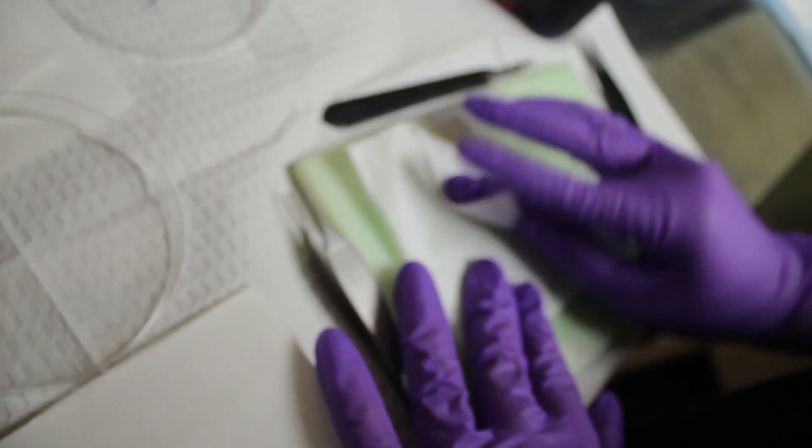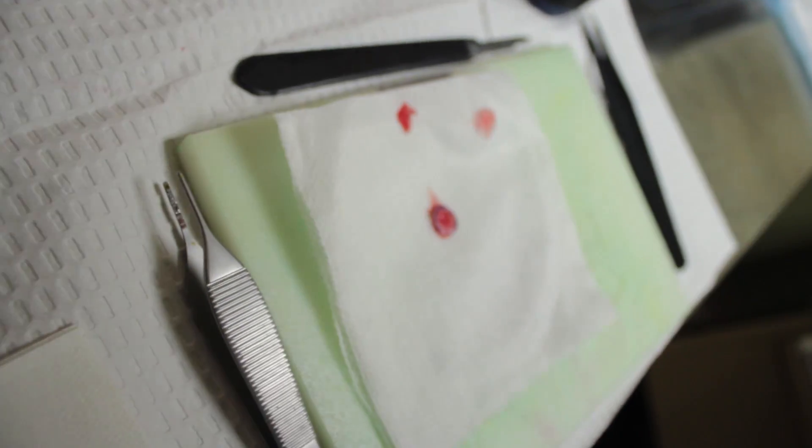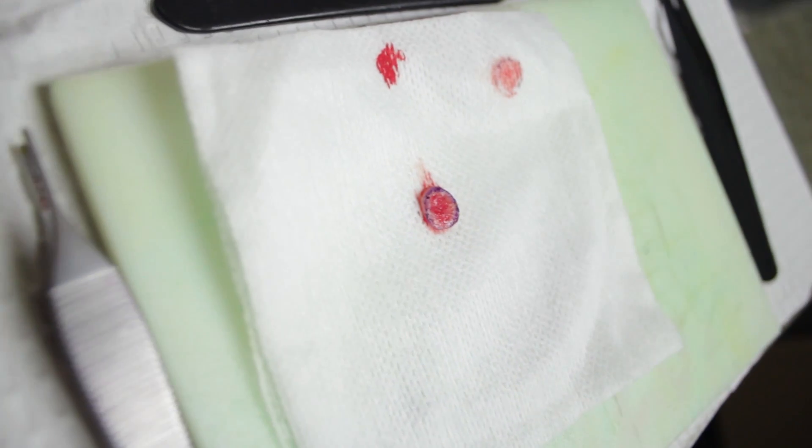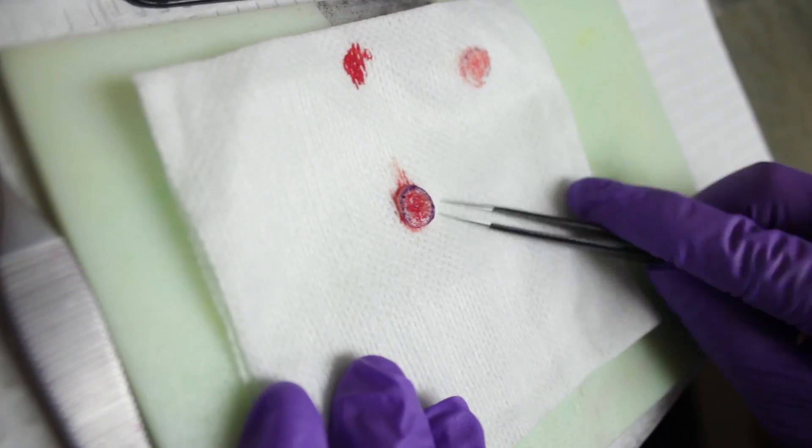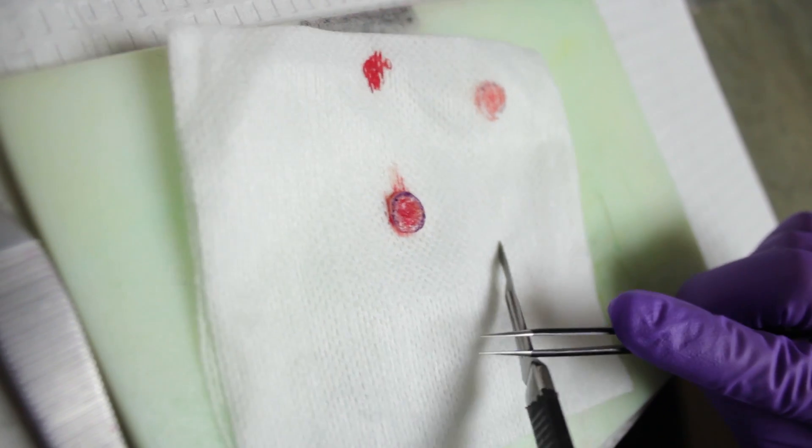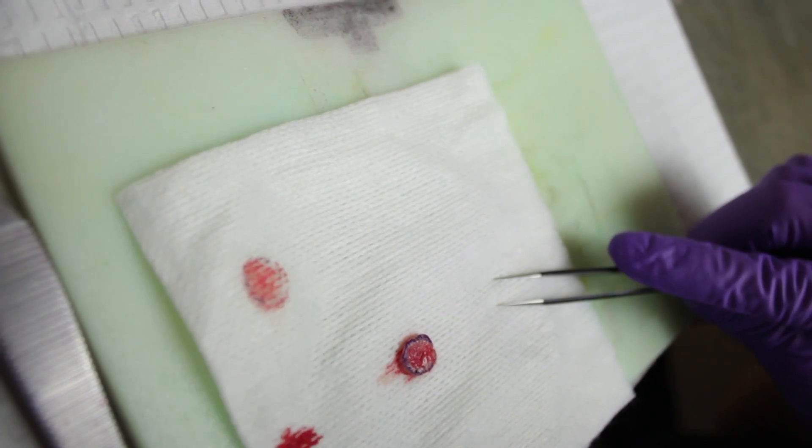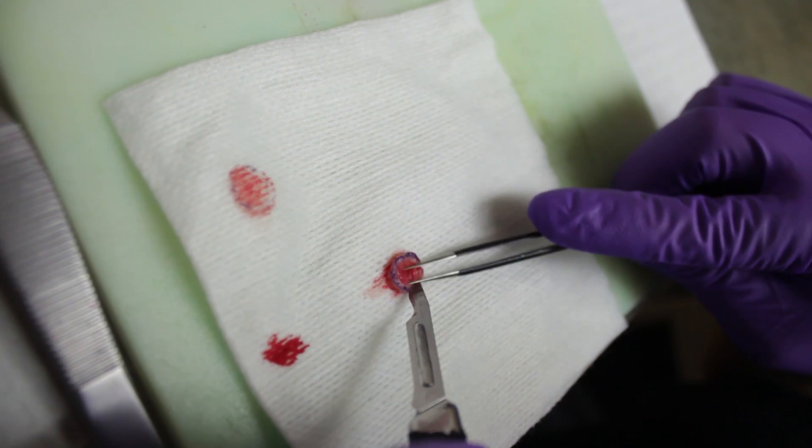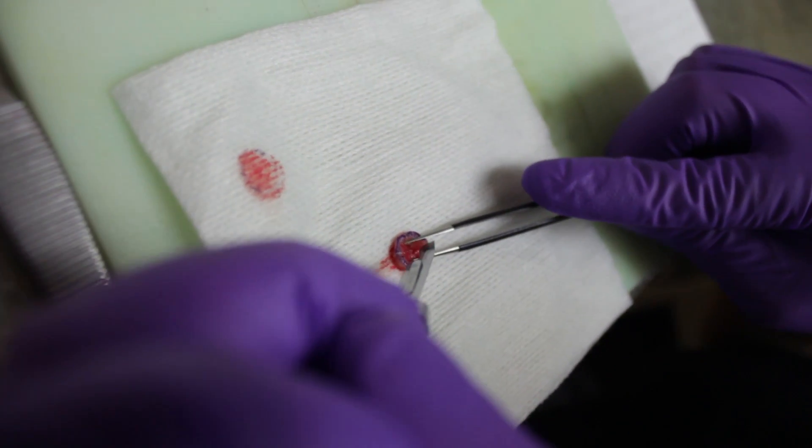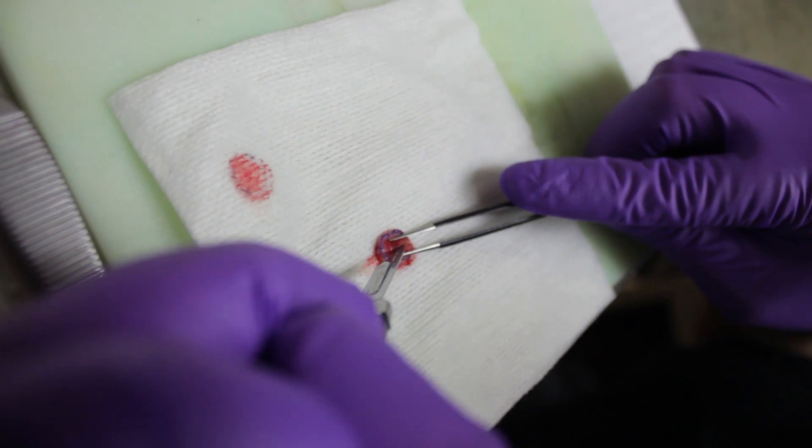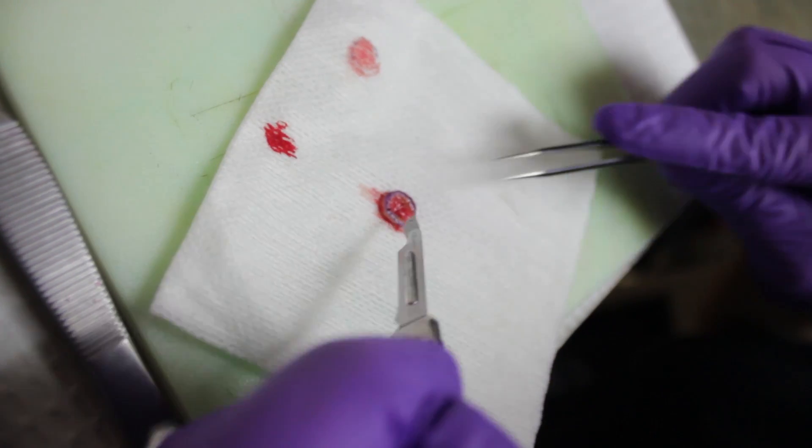I just kind of dab the extra blood off. And then I'm going to make the cut that I showed on the map, which is at the bottom. So here's the 12 o'clock so I'm going to keep orientation. And that's the cut that I have on the map.